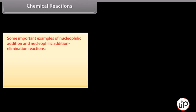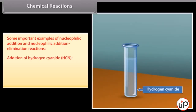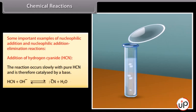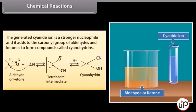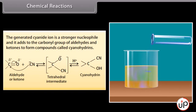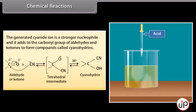Some important examples of nucleophilic addition and nucleophilic addition-elimination reactions. Addition of hydrogen cyanide: the reaction occurs slowly with pure HCN and is therefore catalyzed by a base. The generated cyanide ion is a stronger nucleophile and it adds to the carbonyl group of aldehydes and ketones to form compounds called cyanohydrins.